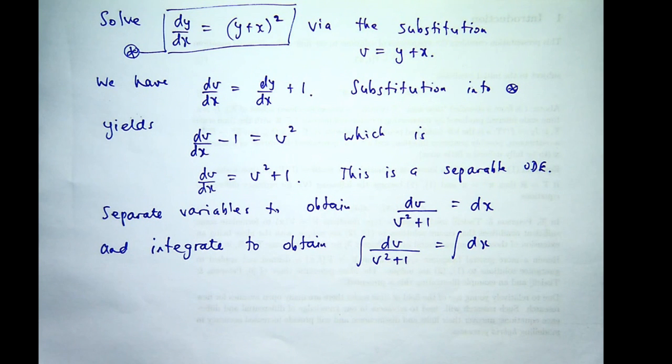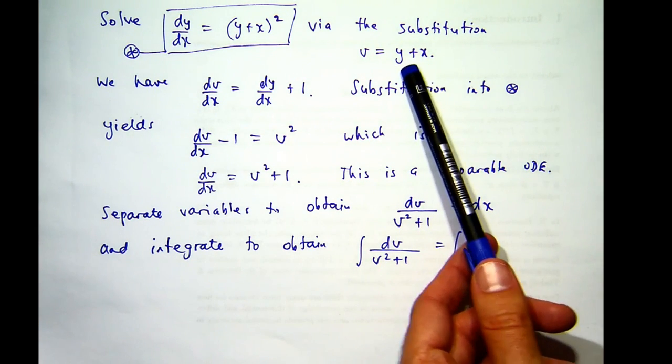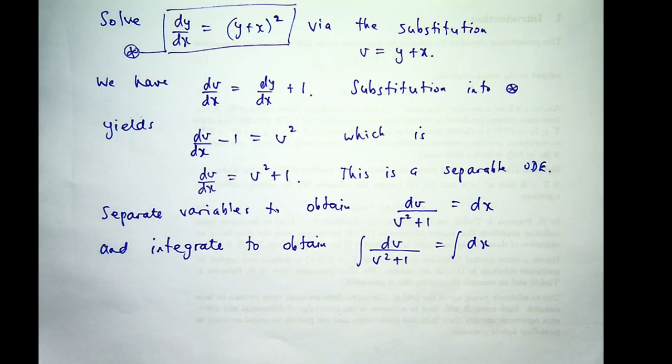So my objective now is to solve for v, and then from my original substitution, I can rearrange and get y. So if I know v, I can go back to my original substitution. I can back-substitute and get y. So I've got two integrals to perform here. This is going to give me an inverse tan v. And over here, I'm just going to get x plus a constant.